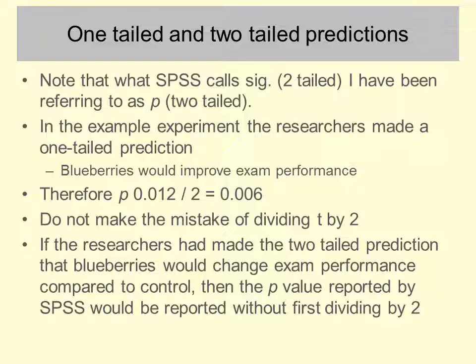Now, if the researchers had not been sure whether blueberries were going to improve exam performance — if they thought blueberries would change performance but weren't sure whether better or worse — then they would have used a two-tailed prediction, which means you would use the value from SPSS without first dividing it by two.